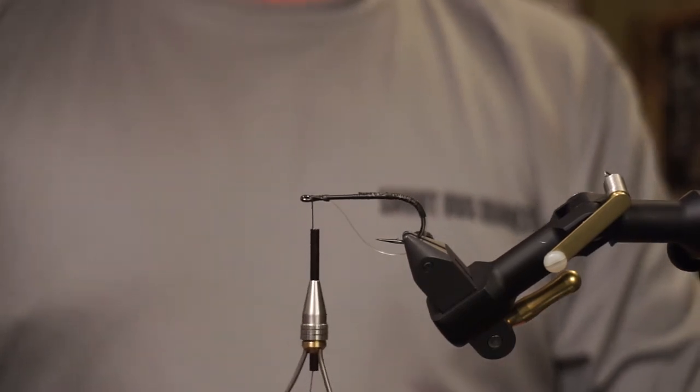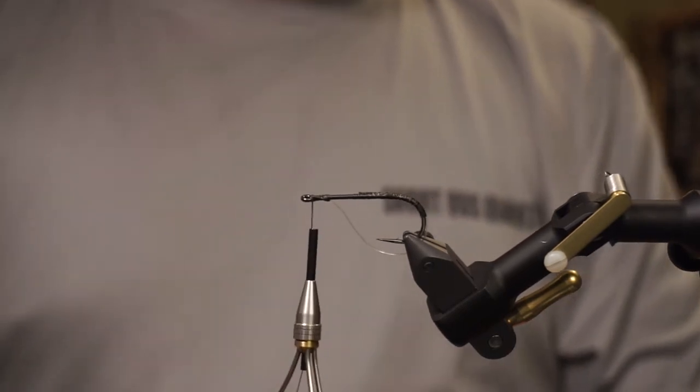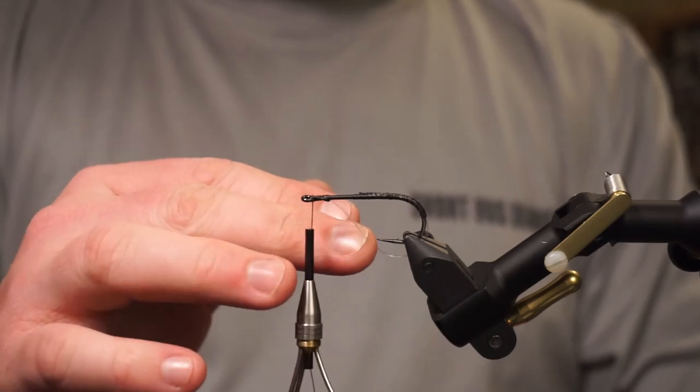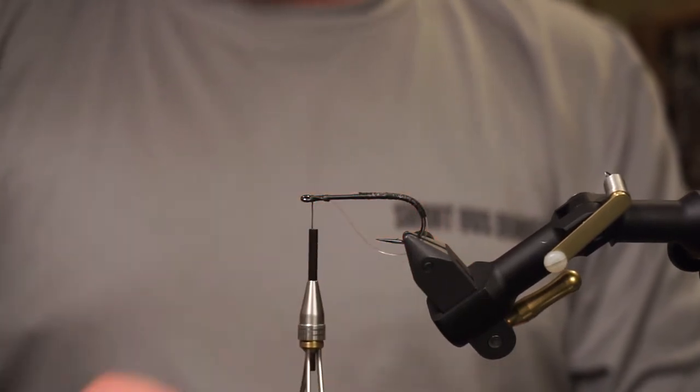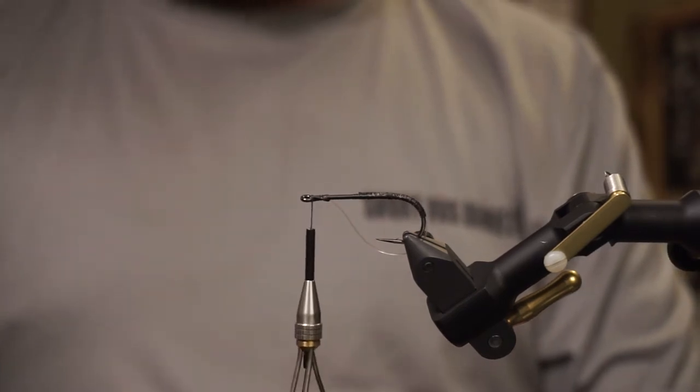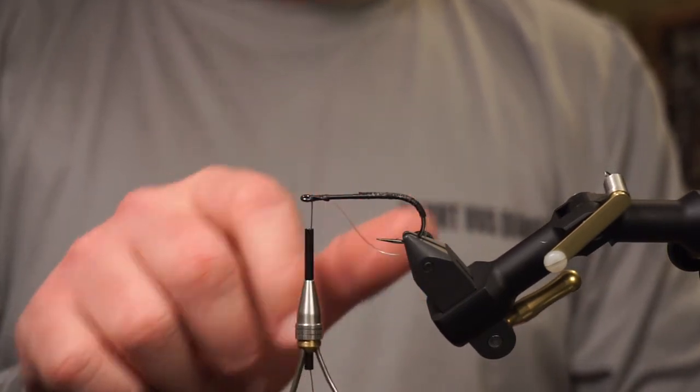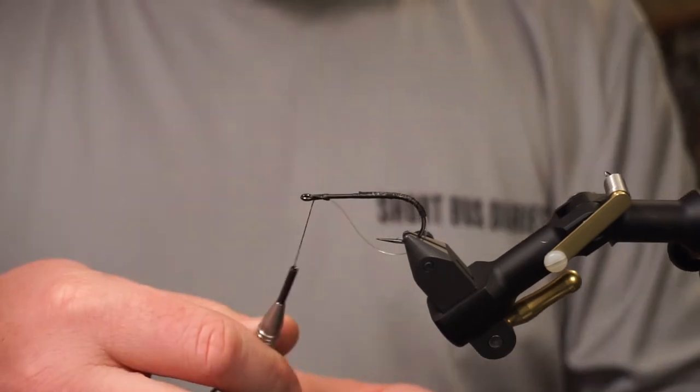If you're fishing around a lot of down logs or trees, this would be a really good one to use. If it's a little soft for you, go bump up a little bit, maybe use 25 or 30 pound mono. That's the first one we wanted to tie.